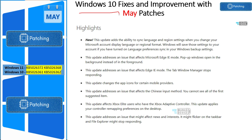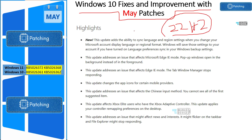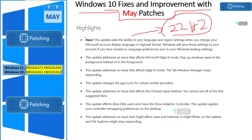Microsoft has already announced end of life for Windows 10, and confirmed that version 22H2 is the last version of Windows 10 — there will be no new feature versions released. However, Windows 10 will continue to receive security patches until end of life, which is in October 2025. With the May patch, there are a few feature additions for Windows 10 — notably, Windows 10 now has the ability to sync language and regional settings when you change the Microsoft account display language or regional format.